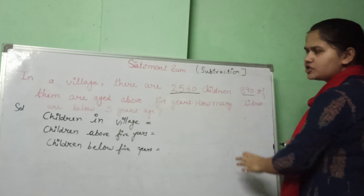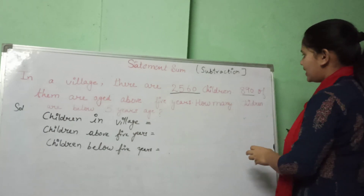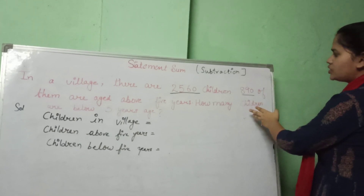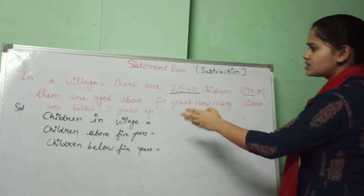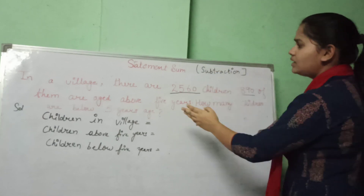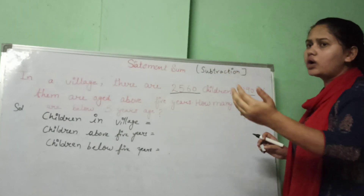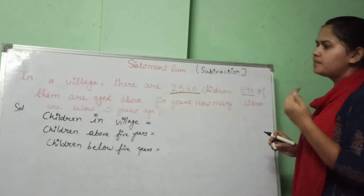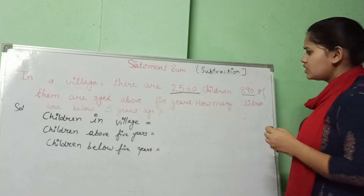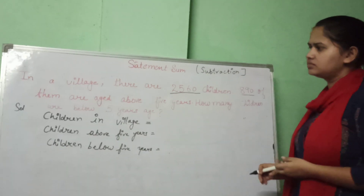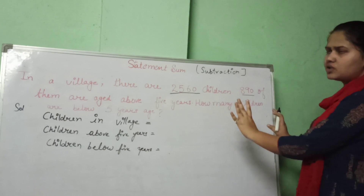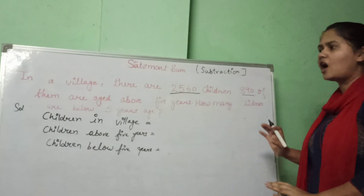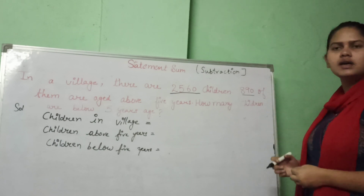We have the total strength of children in the village, which is 2,560. We also have the count of 890 children who are above 5 years. Now we have to find the number of children below 5 years of age.